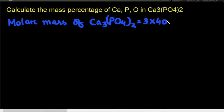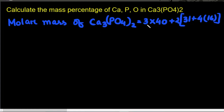Since there are 3 calcium atoms, we will multiply 3 into the molar mass of calcium, plus twice — since there are 2 phosphate ions — we multiply 2 into the mass of phosphorus, since there is 1 phosphorus atom, and 4 into 16 for the 4 oxygen atoms with molar mass 16. So the total molar mass of calcium phosphate is equal to 310 grams.